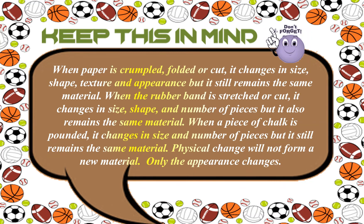When paper is crumpled, folded, or cut, it changes in size, shape, texture, and appearance, but it still remains the same material. When a rubber band is stretched or cut, it changes in size, shape, and number of pieces, but it also remains the same material. When a piece of chalk is pounded, it changes in size and number of pieces, but it still remains the same material. Physical change will not form a new material — only the appearance changes.